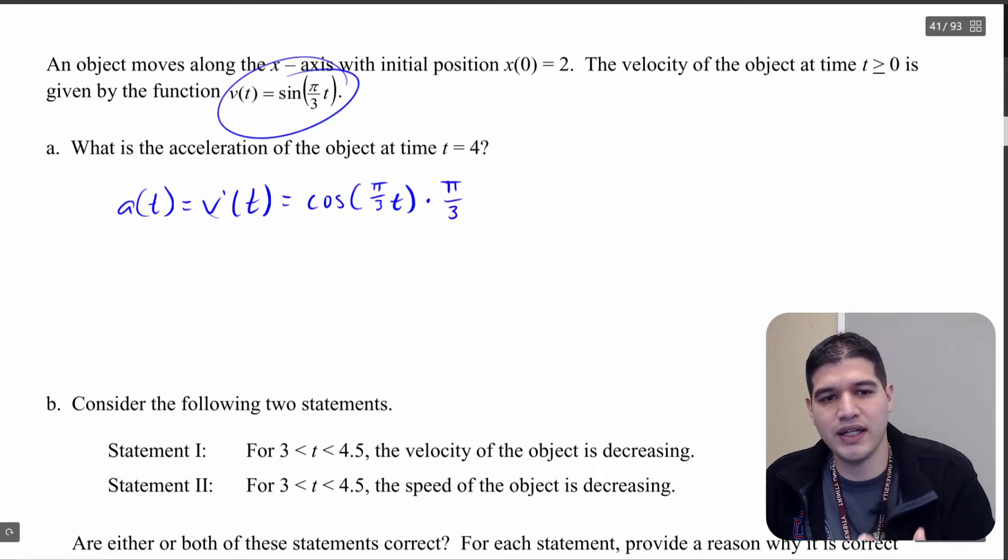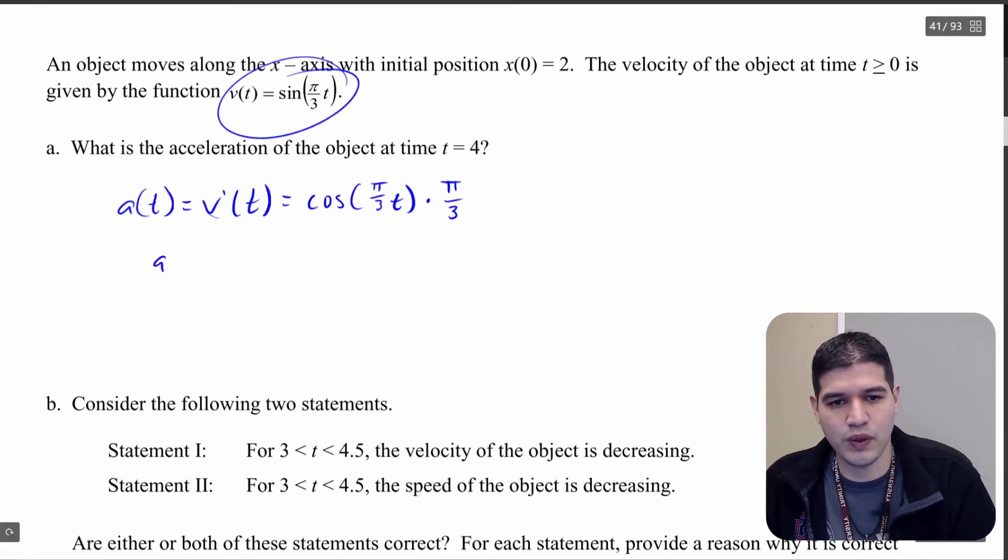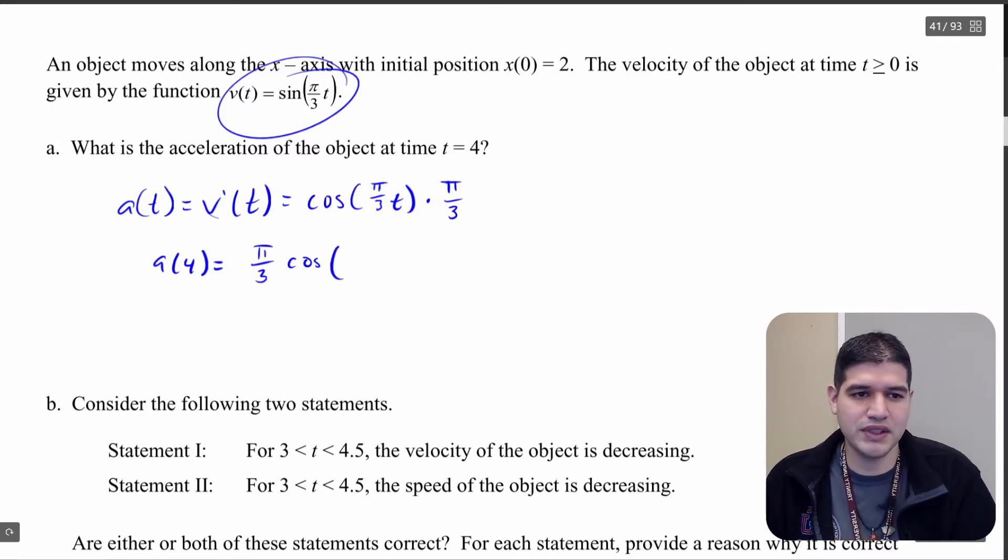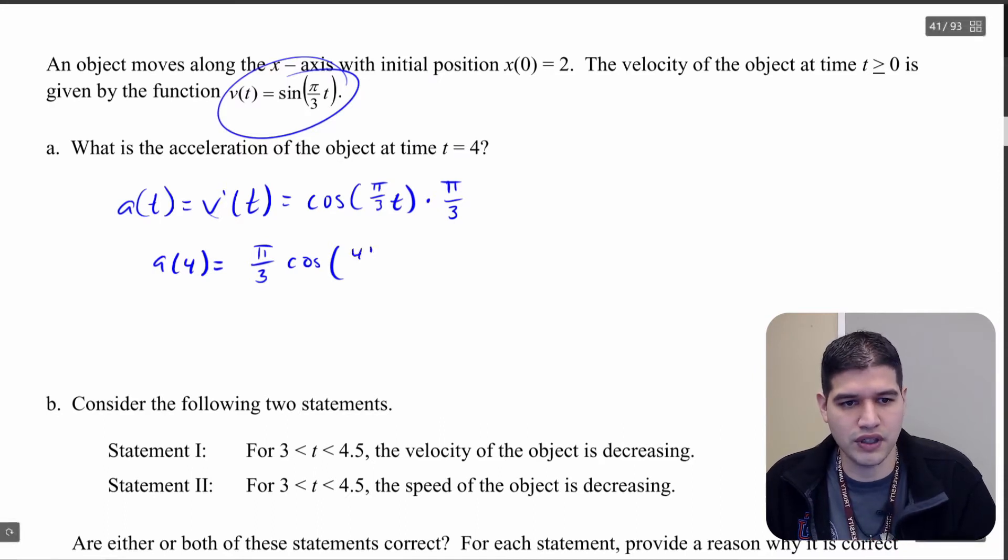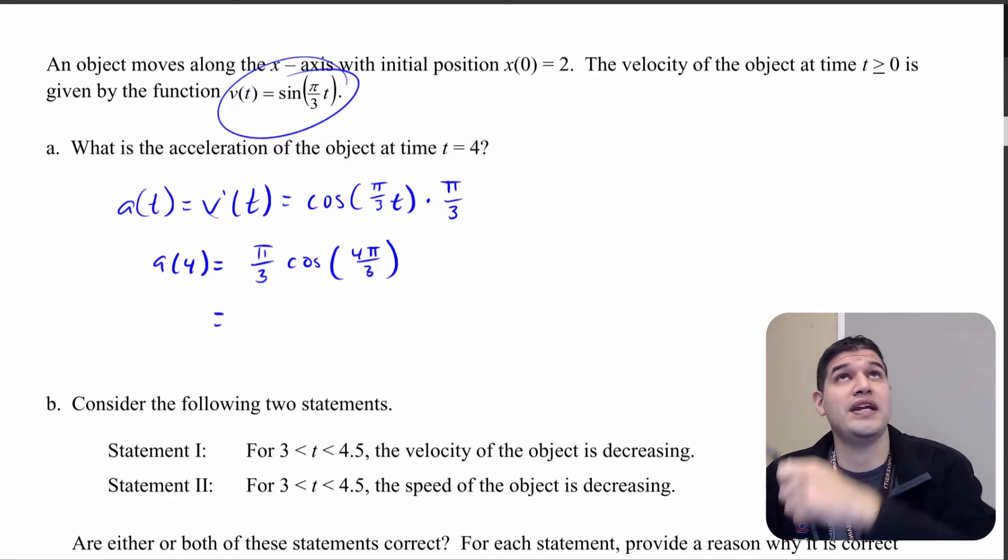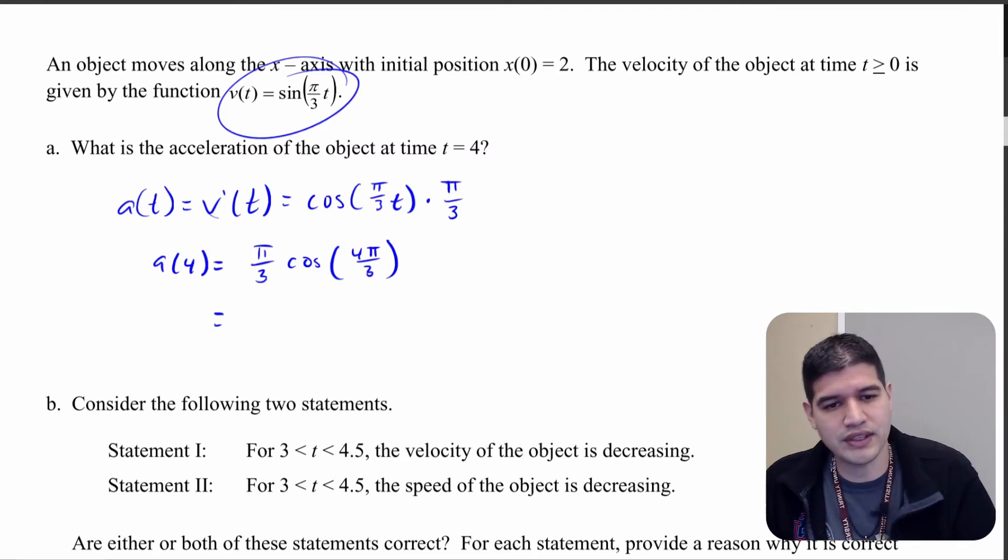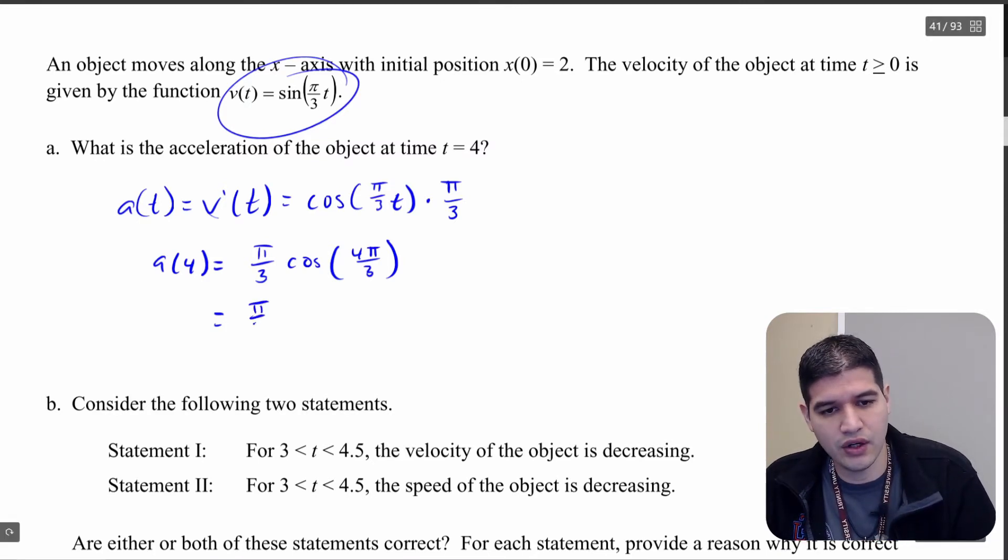Okay, so now what we want to do is find a of 4. That's what we really want. So as I do this, I'm just going to substitute a 4 in here, so I'm going to get pi over 3. I'm going to move that into the front and I'm going to get cosine of, really since this is pi times t, so that's 4 pi over 3. So cosine of 4 pi over 3, and cosine of 4 pi over 3 is, let's see, that's on the negative side, that's 1 half, so it's going to be negative 1 half. So I have pi over 3 times negative 1 half.